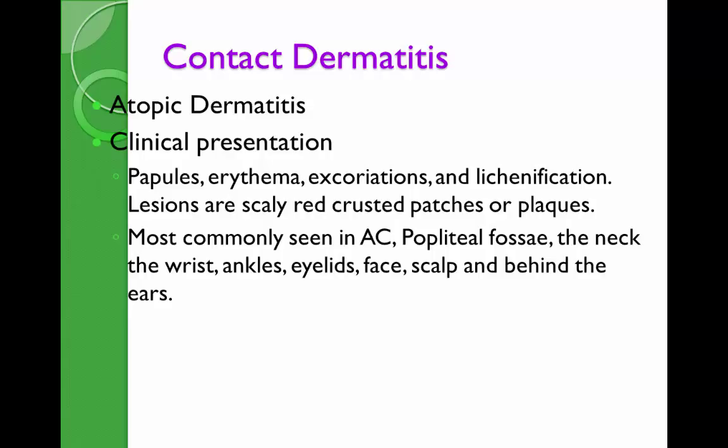The main differential diagnosis includes psoriasis — which does have silver plaques but is usually located on the extensor surfaces rather than flexor surfaces. Atopic dermatitis is mostly in the flexor areas: antecubital when you flex your arm and popliteal fossa. Psoriasis is mostly on the extensors — the knees and elbows. In seborrheic dermatitis, it is mostly in the nasolabial folds, glabellar area, and scalp — not a typical area for atopic dermatitis.